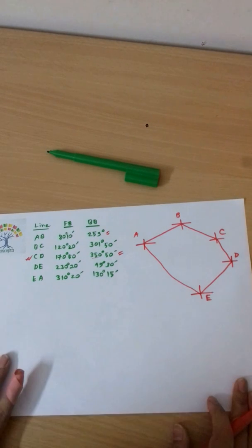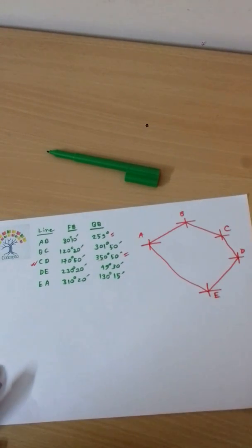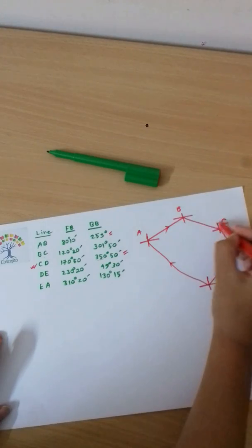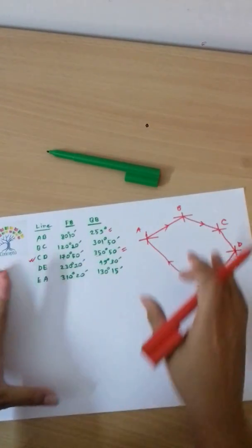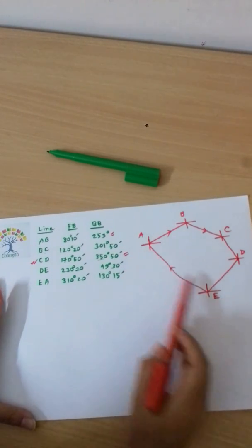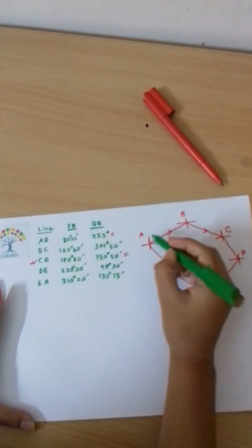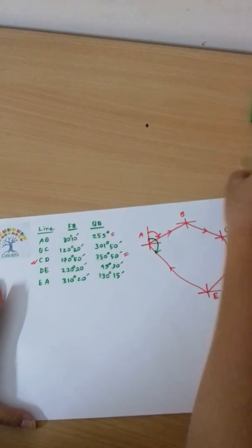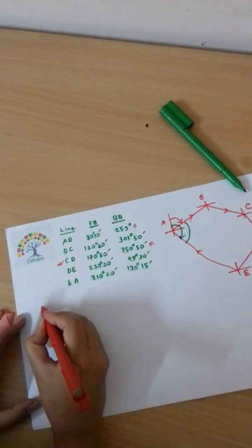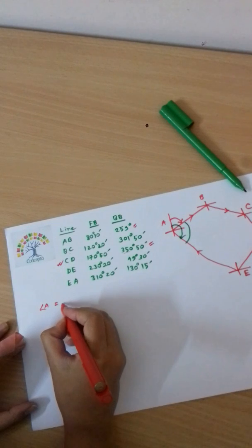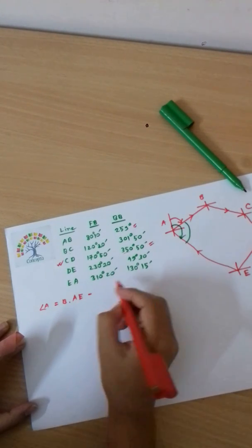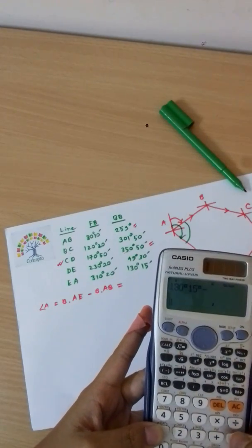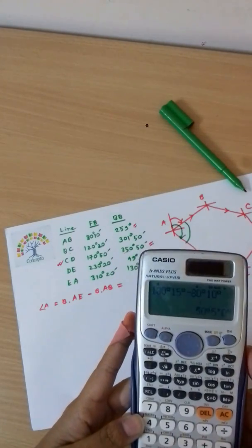To calculate the traverse angles, we use the formula: angle equals bearing of AE minus bearing of AB. Let me work this out: bearing of AE is 130 degrees 15 minutes minus bearing of AB which is 80 degrees 10 minutes, giving us angle A equals 50 degrees 5 minutes.